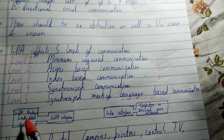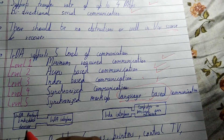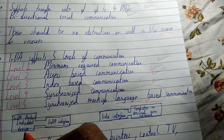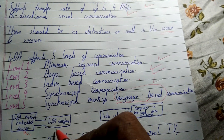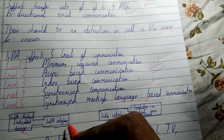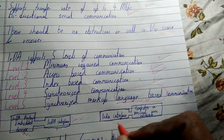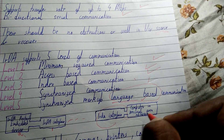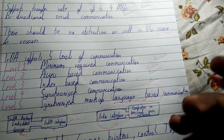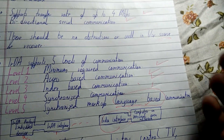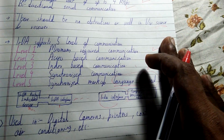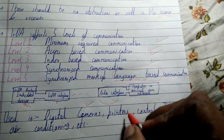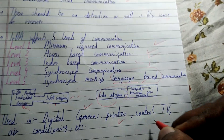Now let us look at the diagram of the IRDA protocol. In an embedded device, like a remote, that is connected with an IRDA interface, it transmits a signal wirelessly to another IRDA interface connected to your computer or some other embedded system.